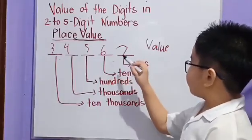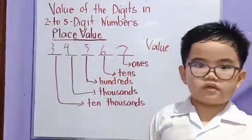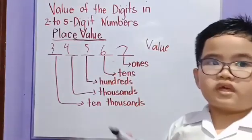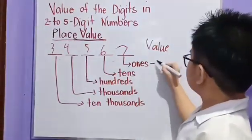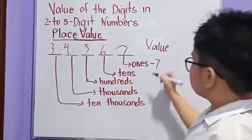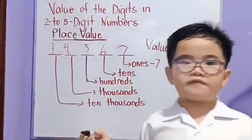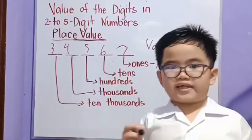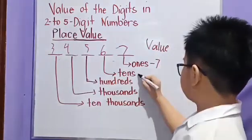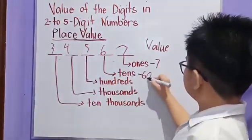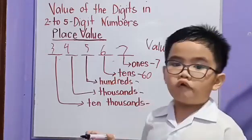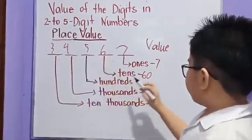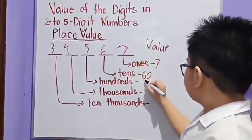What is the value of 7? You are right! It's 7. What is the value of 6? You are right! It's 60. What is the value of 5? You are right! It's 500.